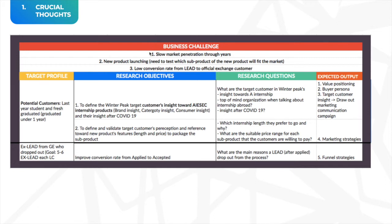Here's an example from Vietnam: one of our biggest business challenges with OGP is a really slow market penetration rate. Looking at the data, I found that we hadn't clearly defined the buyer persona and customer insight, especially for the winter peak. So my first research objective was to define winter peak target customer insights towards our internship abroad product. My research questions were: what are the target customers' insights in winter peak, what is top of mind when they think about internship abroad, and what are their current insights after COVID-19.